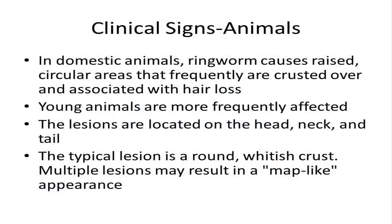In animals, the classic ringworm lesions are patchy areas of hair loss and scaliness, usually with very little inflammation or redness. It is not usually itchy. In domestic animals, ringworm causes raised, circular areas that frequently are crusted over and associated with hair loss.